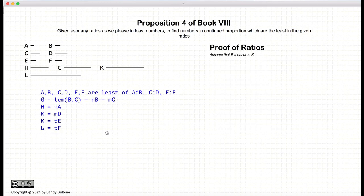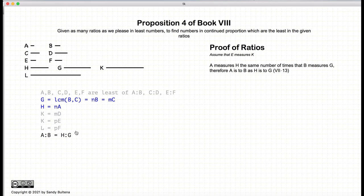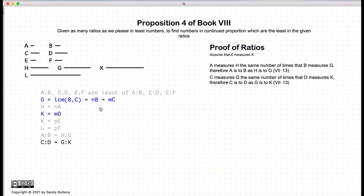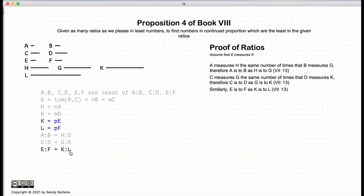Now let's carry on to the proof, remembering that this proof is assuming that E measures K. This is what we have constructed, so there's nothing new here. Since A measures H the same way that B measures G, A to B is equal to H to G. Likewise, C to D is equal to G to K because they're the same multiple. We have that K and L are the same multiples of E to F, so the ratio of E to F is equal to the ratio of K to L. So, assuming that E measures K, we have found these four numbers and they satisfy what we were looking for.